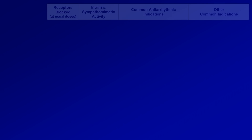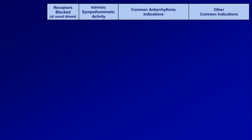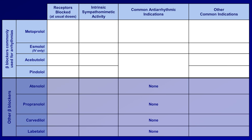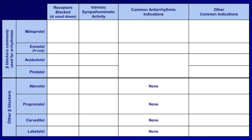Now we are ready to discuss individual drugs. I'm going to talk about eight of them. Four are commonly used for the treatment of arrhythmias: metoprolol, esmolol (which is available only as a continuous IV infusion), acebutolol, and pindolol. The other four are not typically used for arrhythmias: atenolol, propranolol, carvedilol, and labetalol. I'm discussing these four non-antiarrhythmic drugs to highlight differences, particularly since they are very commonly encountered in practice and are occasionally used for arrhythmias. It's also to emphasize that every beta-blocker is unique — they are not completely interchangeable like some other drug classes.